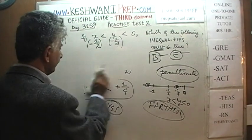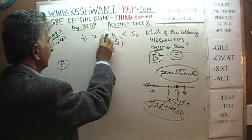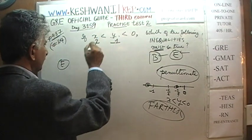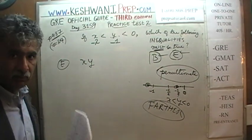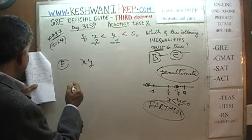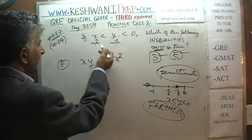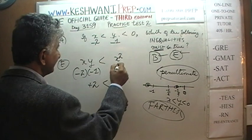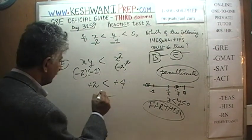Round two — this time with whole numbers. Let's plug in y = -1 and x = -2. For E: xy = -2 times -1 = positive 2. Is 2 less than x² = (-2)² = 4? Yes, of course. E still works.